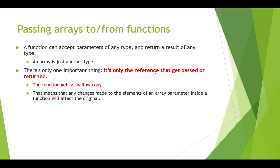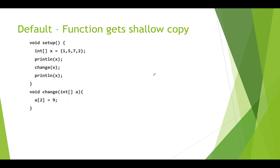The reference inside that function is pointing at the original array on the heap. So if you make changes to the elements of an array from within a function, those changes will be reflected in the original array after you leave the function. If this is not what you want, the function must make its own copy of the array. Let's look through an example to see how this works.